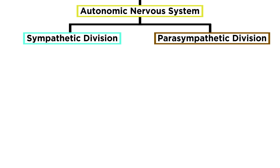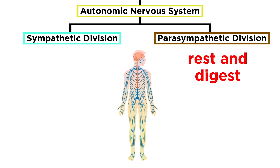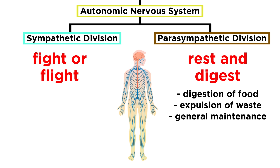The autonomic nervous system has two divisions that serve the same parts of the body but have opposing roles. The parasympathetic division is for rest and digest actions — it directs the digestion of food and the expulsion of waste, along with other maintenance-related actions that occur best in a state of relaxation. The sympathetic division, on the other hand, springs into action in emergency situations, enacting the fight or flight instincts.